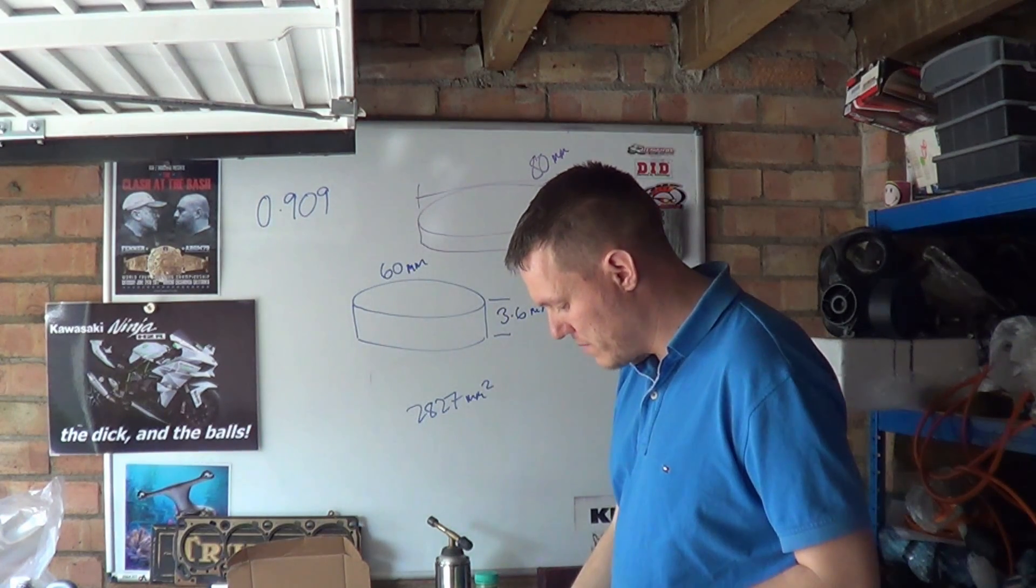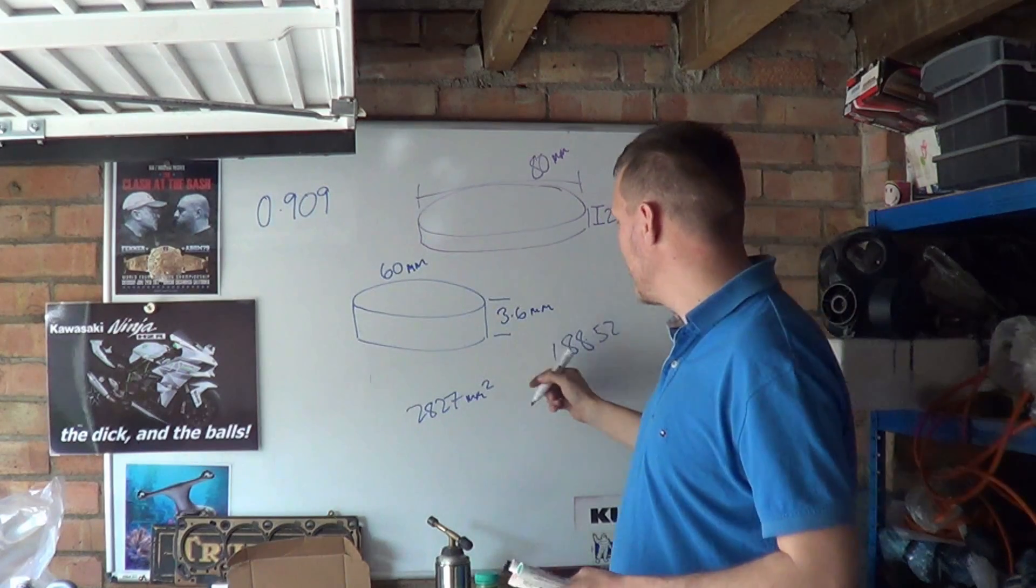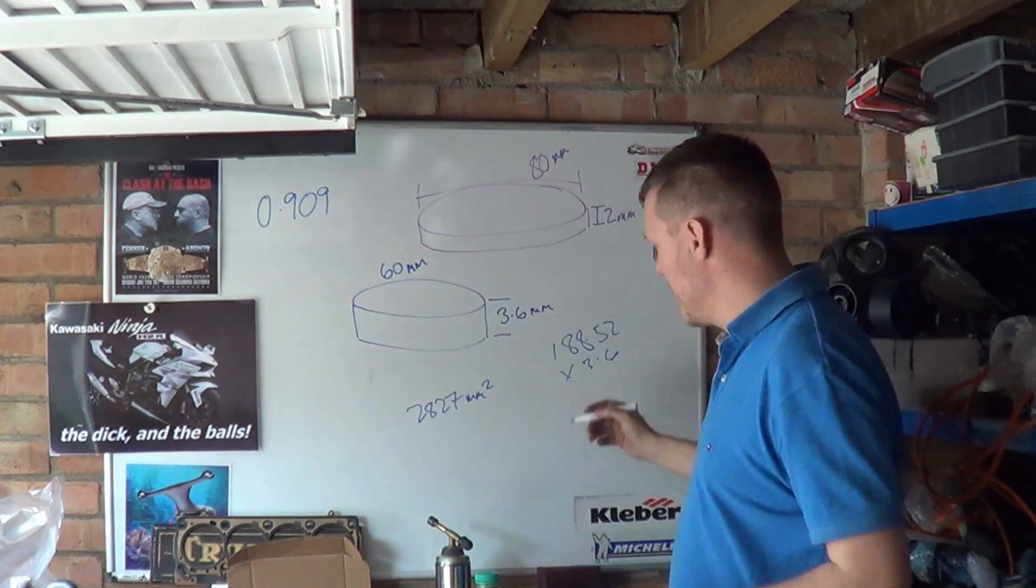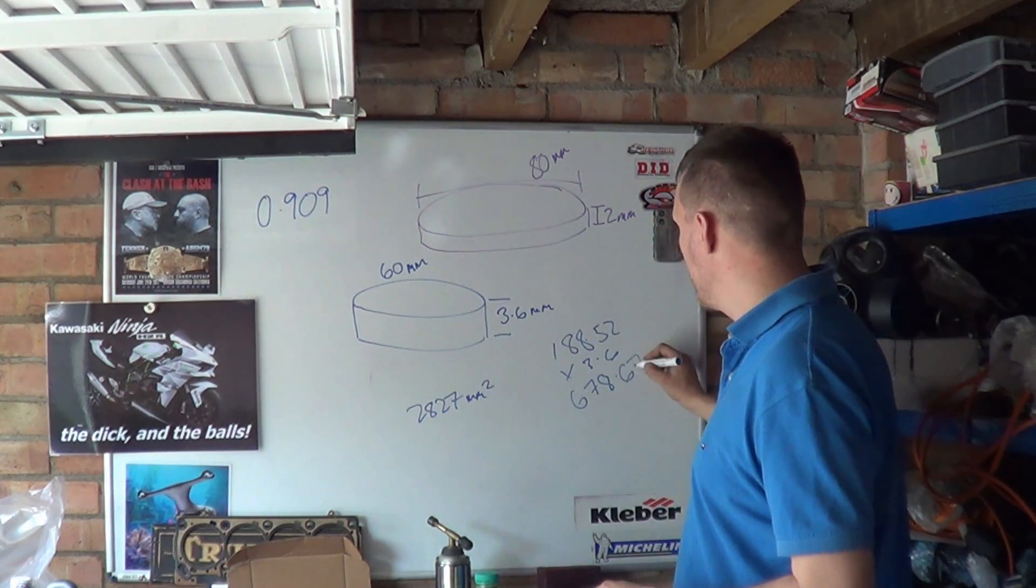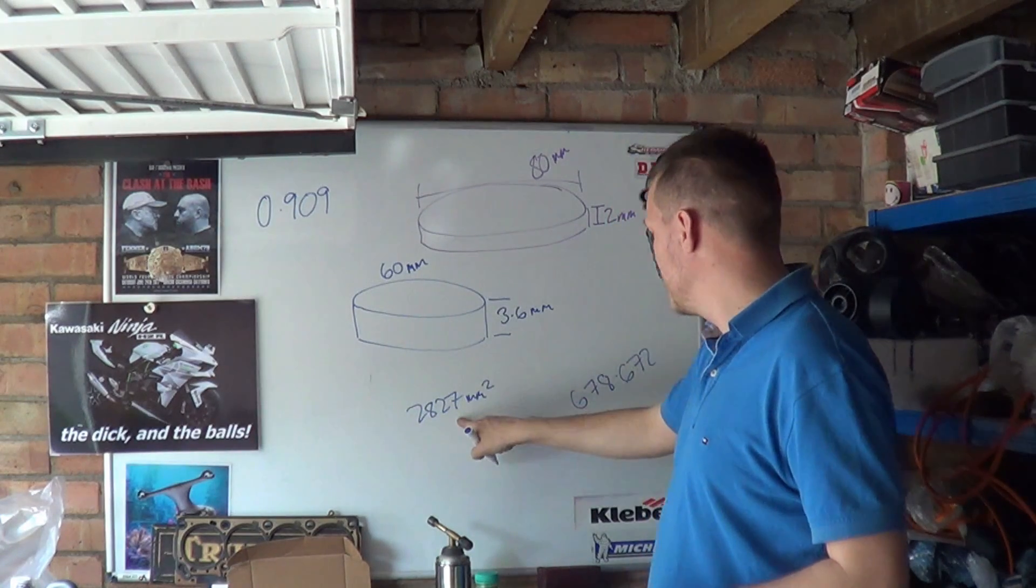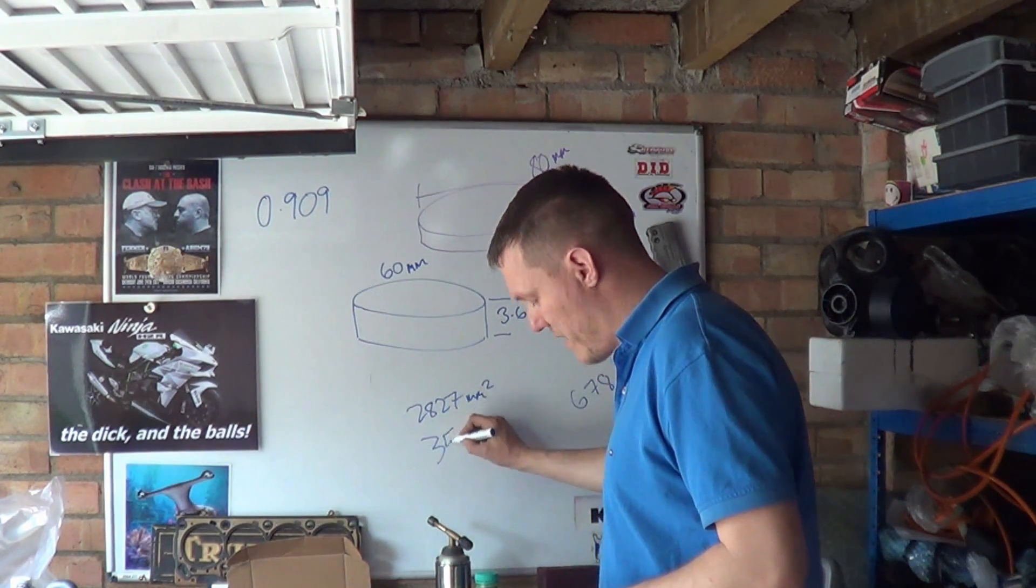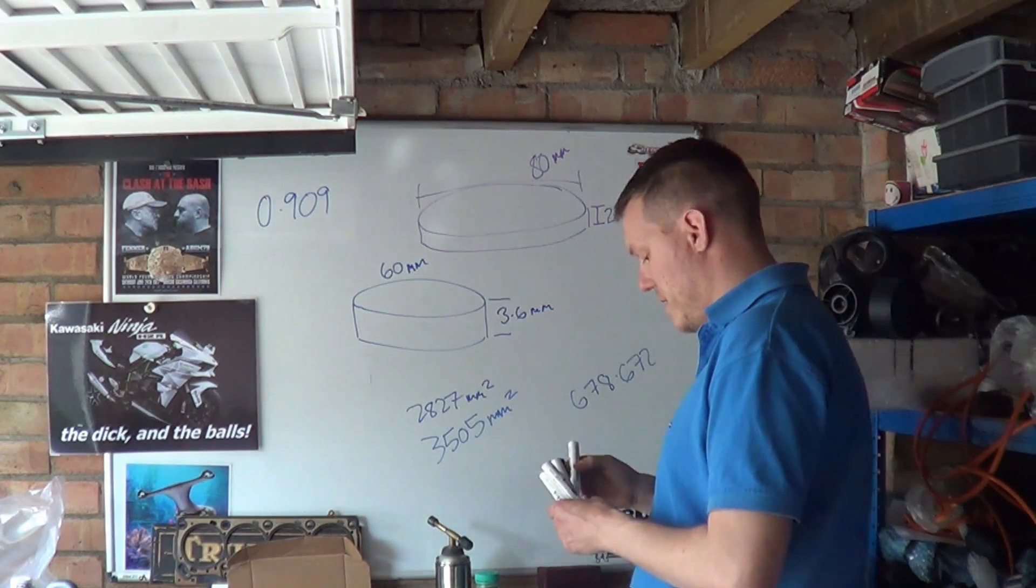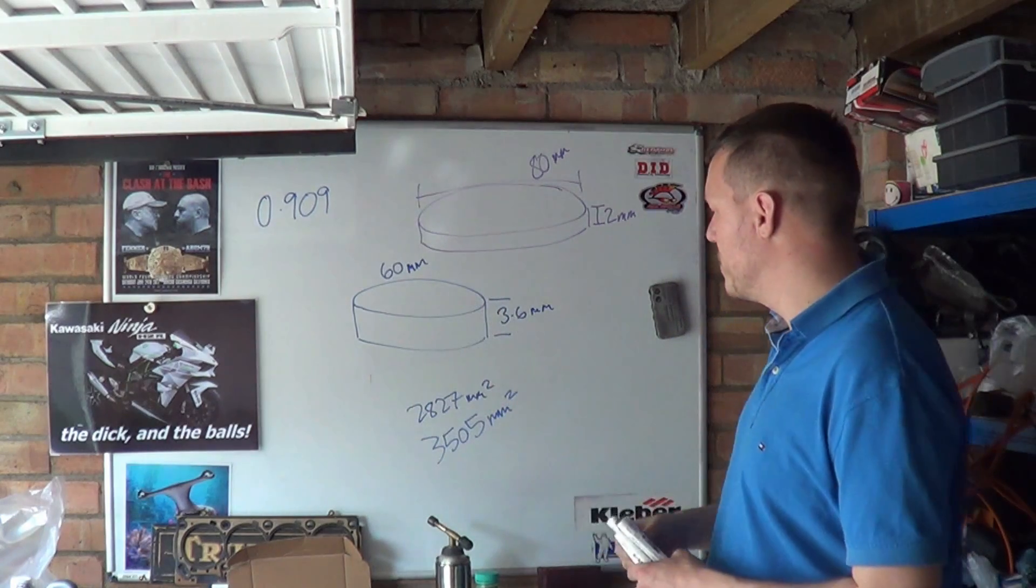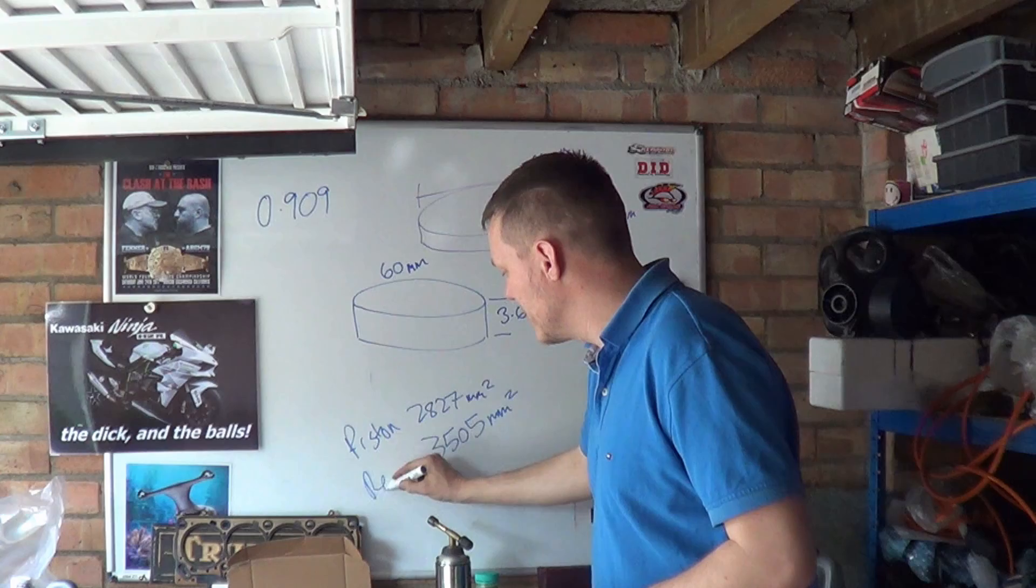Next, 60 times 3.142 gives us our circumference, which is 188.52. We then times that by 3.6, which gives us 678.672 for the sidewall area. We plus 2827 to that, and we get 3505 millimeters squared. That's the surface area of the top and the whole wall all the way around - everything but the piston.